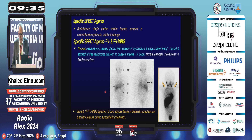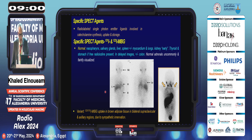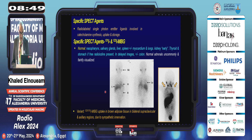Specific SPECT tracers are radiolabeled single-photon emitters involved in catecholamine synthesis, uptake, and storage. The most famous is Iodine-123 and Iodine-131 MIBG. Normal distribution of MIBG is encountered in the salivary glands, liver, spleen, and myocardium. The lungs may or may not be visualized. Kidney activity is identified early. Thyroid and stomach are seen if free radioiodine is present, and in delayed images the colon may be identified. The normal adrenals are uncommonly and faintly visualized, which may create a problem — if the gut is visualized, it is difficult to determine whether this is physiologic uptake or a tumor.